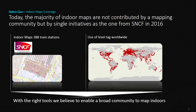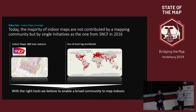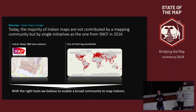Looking at where we are today, there is a map of the level tag — the tag used to indicate whether something is indoors. A little has happened, but not so much in the broad community. Mostly there were initiatives like SNCF's, where they mapped a bunch of train stations. Most indoor maps available today are done by these private initiatives, and we want to broaden that so everybody can take part.